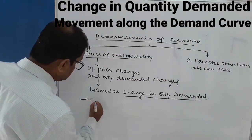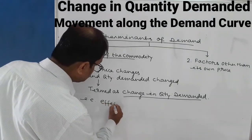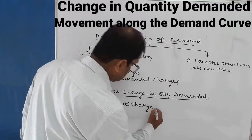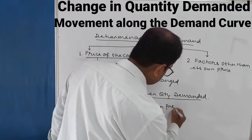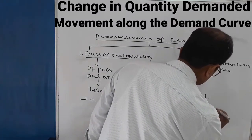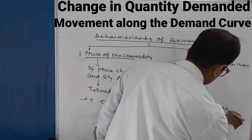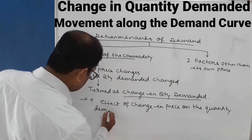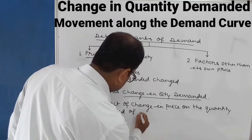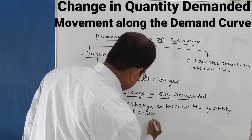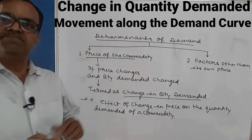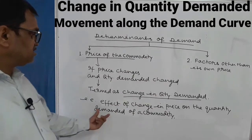Change in quantity demanded is the effect of change in price on the quantity demanded of a commodity. Whatever change happens in price, its effect on the quantity demanded of that commodity is what we call change in quantity demanded.